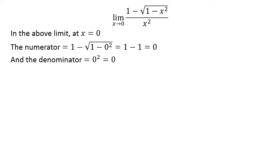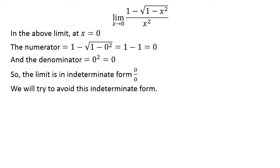In the above limit, as x equals 0, the numerator is equal to 0 and also the denominator is equal to 0. The above fact implies that the limit is in 0 upon 0 indeterminate form. We will try to avoid this indeterminate form by application of simple techniques of mathematics.